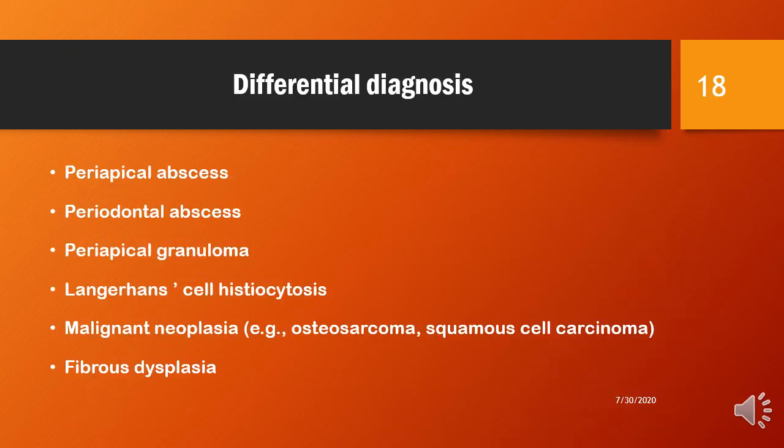Coming to the differential diagnosis: periapical abscess, periodontal abscess, periapical granuloma, Langerhans cell histiocytosis, malignant neoplasia including osteosarcoma and squamous cell carcinoma, and finally fibrous dysplasia.